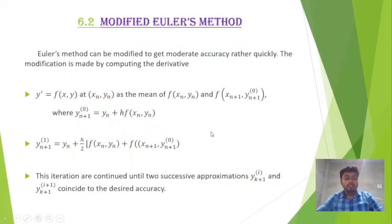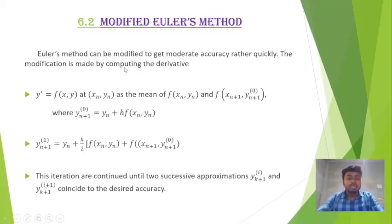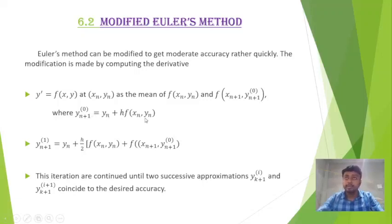Now we discuss Modified Euler's method. Euler's method can be modified to get moderate accuracy more quickly. The modification is made by computing the derivative y' = f(x, y) at xₙ, yₙ as the mean of f(xₙ, yₙ) and f(xₙ₊₁, yₙ₊₁⁽⁰⁾), where yₙ₊₁⁽⁰⁾ = yₙ + h·f(xₙ, yₙ). The ultimate result is yₙ₊₁⁽¹⁾ = yₙ + (h/2)[f(xₙ, yₙ) + f(xₙ₊₁, yₙ₊₁⁽⁰⁾)].